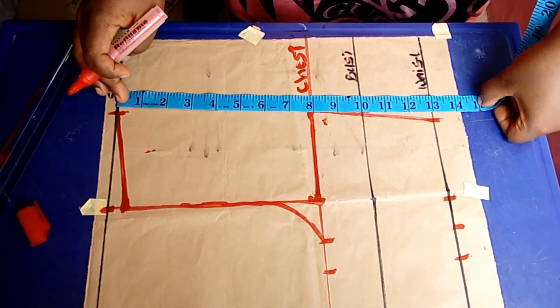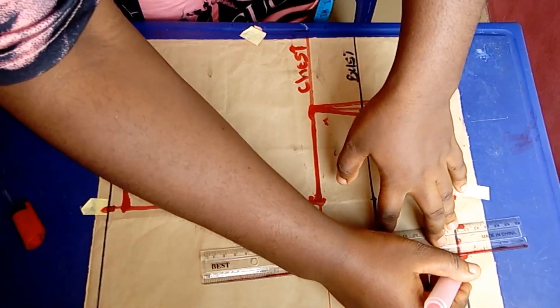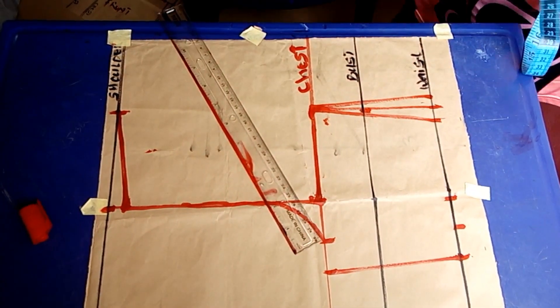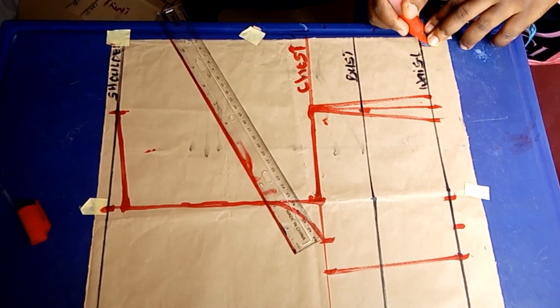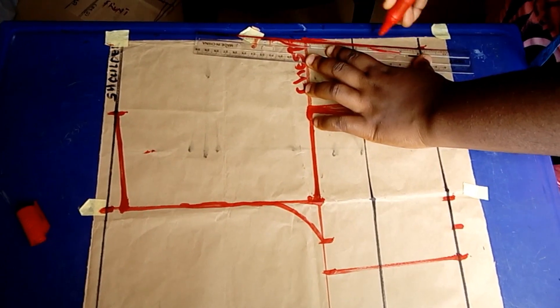As you can see, the back is shorter than the front because the front has the bust while the back does not have the bust, so it's usually flat. Now I'm going to be removing half an inch to eliminate zip bulge, so that part is going to be cut out.